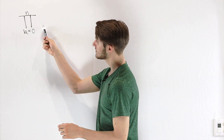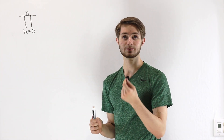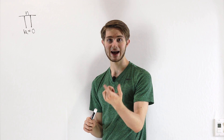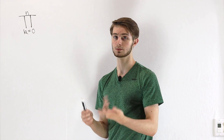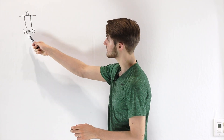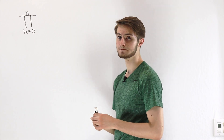Pi notation functions the exact same way as sigma notation, but instead of adding things, we're multiplying them. In this case, we'll take the product from k equals 0 to n.